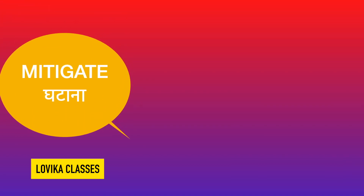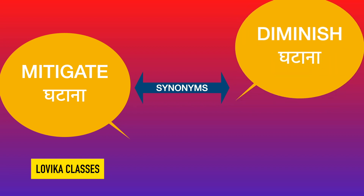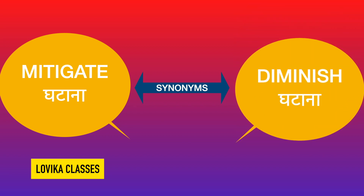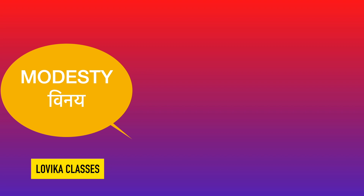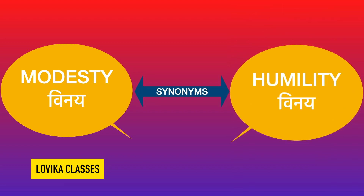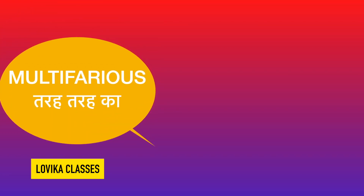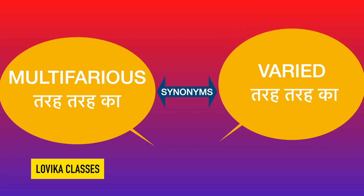Mitigate means ghatana — its synonym is diminish, again meaning ghatana. Modesty means winner — its synonym is humility. Multifarious means tarahan tarahan ka, different different — its synonym is varied.